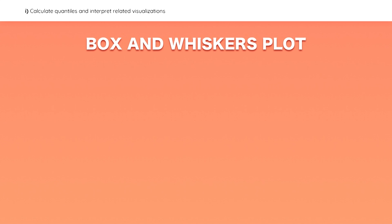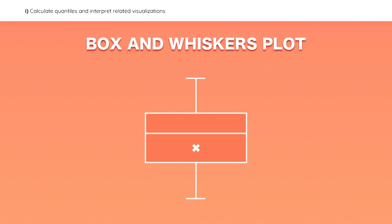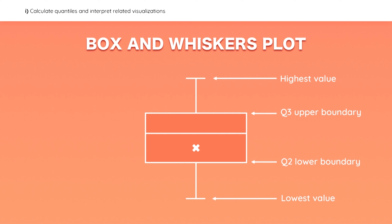Another way to visualize quantile data is with a box and whisker plot. The plot tells you a dataset's highest value, lowest value, interquartile range, average, and median. Make sure you can identify each of these items.